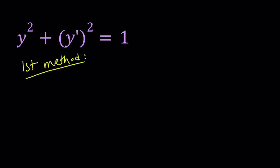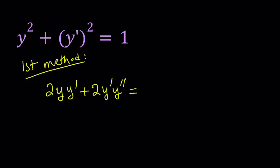If you differentiate y squared implicitly, because y is a function of x, we use the power rule first and then multiply by the derivative of the inside — that's the chain rule. So the derivative of y squared is 2y times y prime. The same rule applies to y prime squared: it becomes 2 times y prime times y double prime, which is the second derivative. And 1 is a constant, so its derivative is 0.